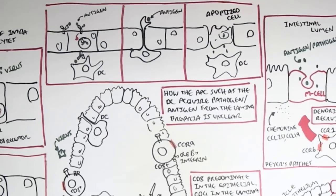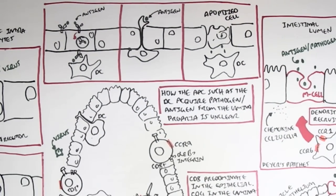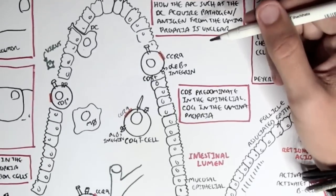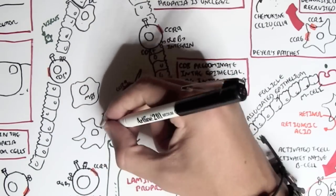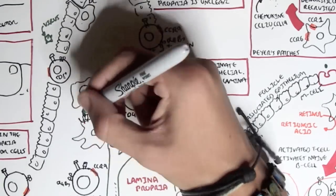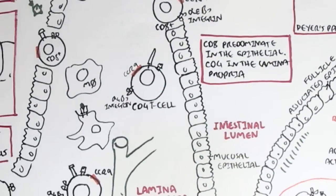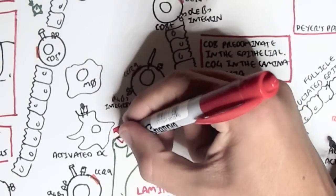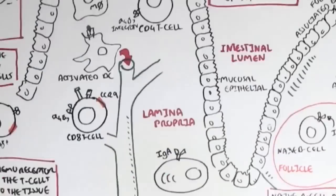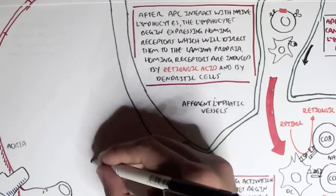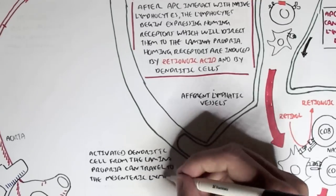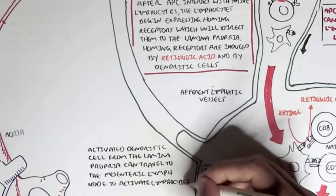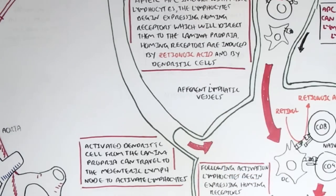Once the dendritic cell obtains an antigen, it is activated and begins presenting it on an MHC class II. With this MHC class II, it also begins expressing receptors allowing it to move into the mesenteric lymph nodes, the same process as with dendritic cells from the Peyer's patches. The activated dendritic cell from the lamina propria can then travel to the mesenteric lymph node to activate the naive CD4 and naive CD8 T cells.